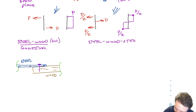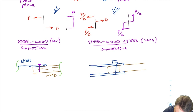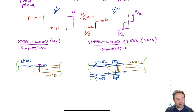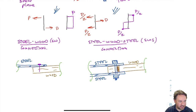Here we have a steel-wood-steel connection — steel plates on either side of the wood element, joined by a bolt. I cannot do this type of connection with a nail, because I can't get the nail from the steel through the wood and then embed it in the last piece of steel. If I wanted to use nails, I would have to consider two separate steel-wood connections nailing from each side, but I won't have two shear planes that way.